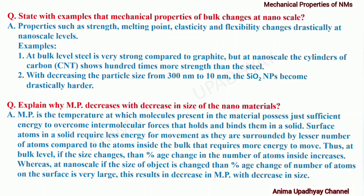State with examples that mechanical properties of bulk change at nanoscale. Properties such as strength, melting point, elasticity and flexibility change drastically at nanoscale levels. First, at bulk level, steel is very strong compared to graphite or carbon. But at nanoscale, cylinders of carbon — that is carbon nanotubes — show hundred times more strength than steel. Another example is that with decreasing particle size from 300 nanometers to 10 nanometers, silicon dioxide nanoparticles become drastically harder.